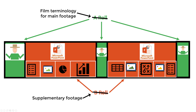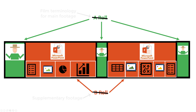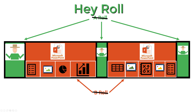But I want to change the terminology a little bit. I want to call these green areas where you're on screen Hey-Roll — hey, how you doing? And the orange areas where you're showing your PowerPoint slides, we're going to call those P-Roll. P stands for PowerPoint and for your mouse pointer.